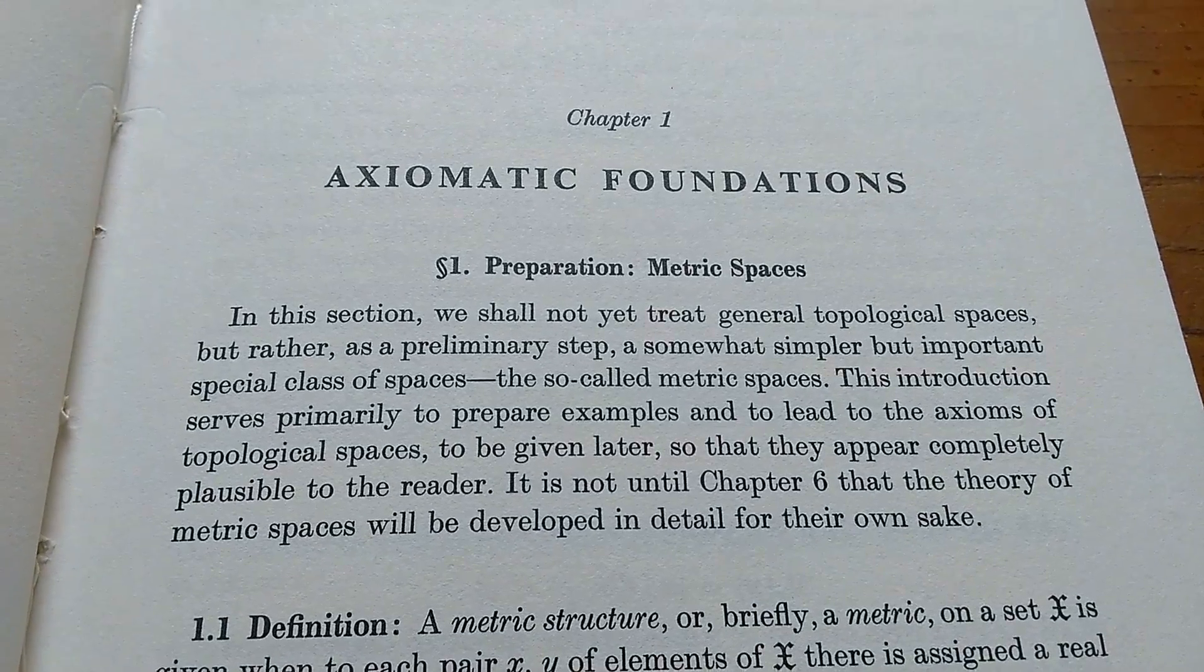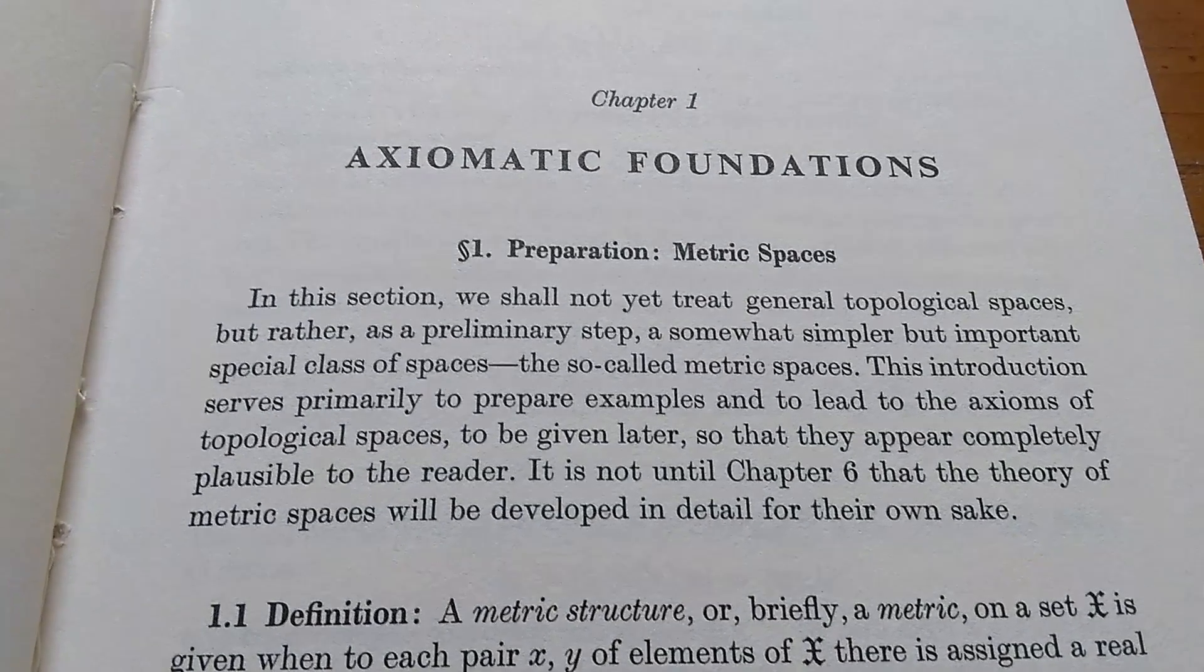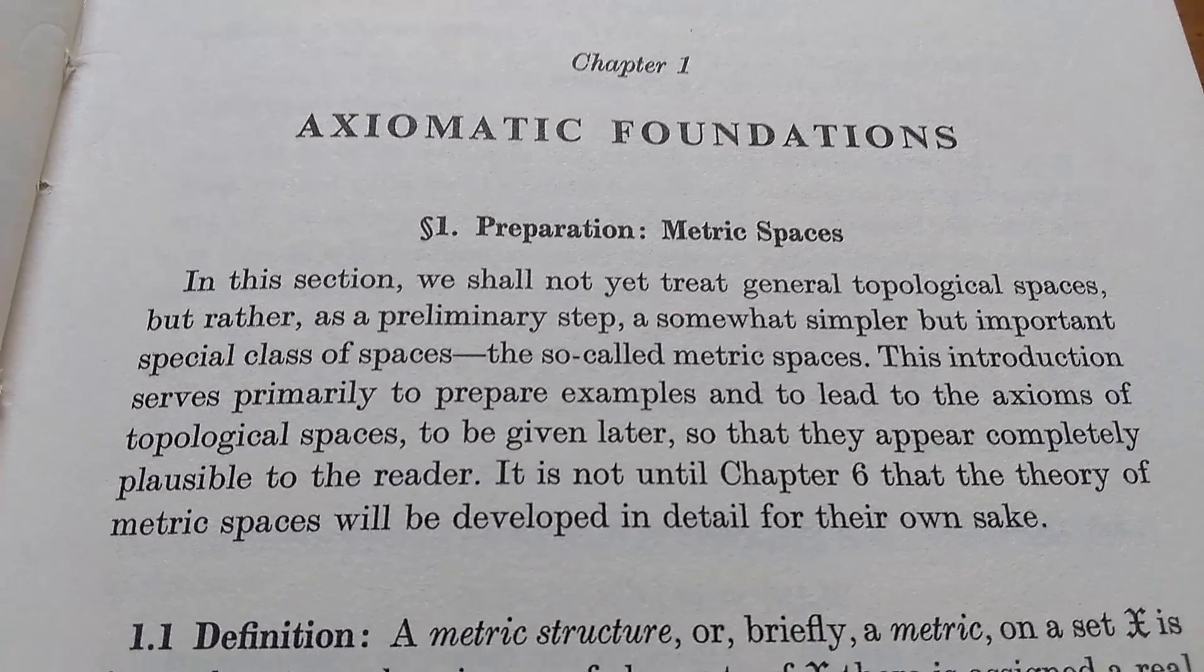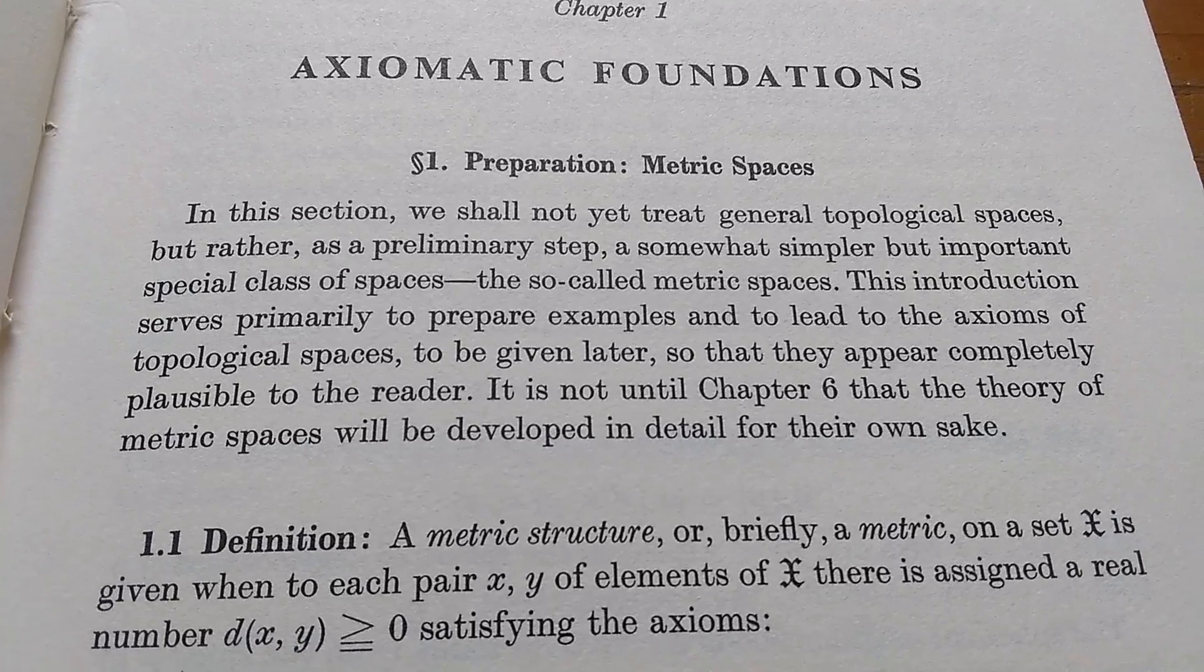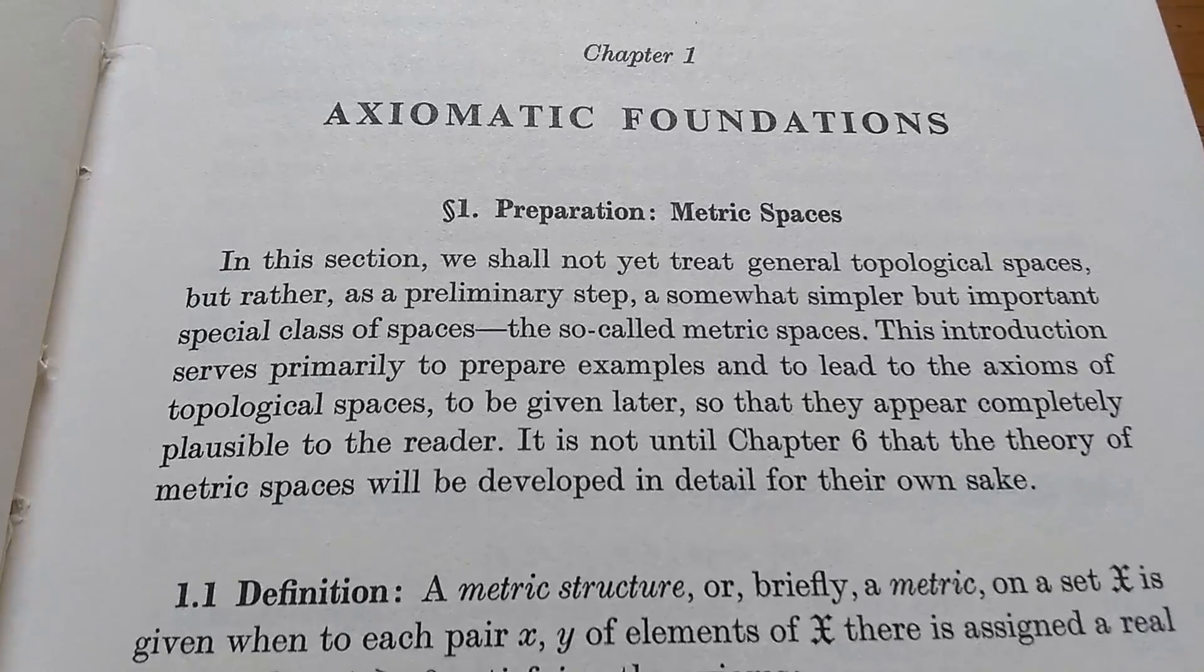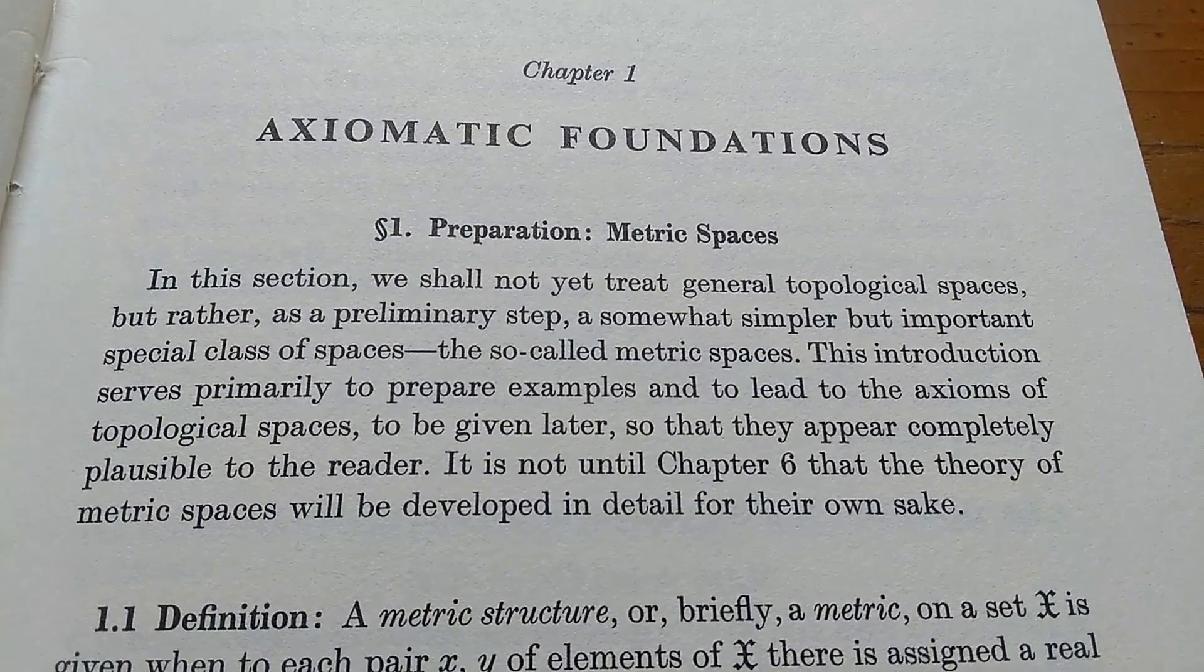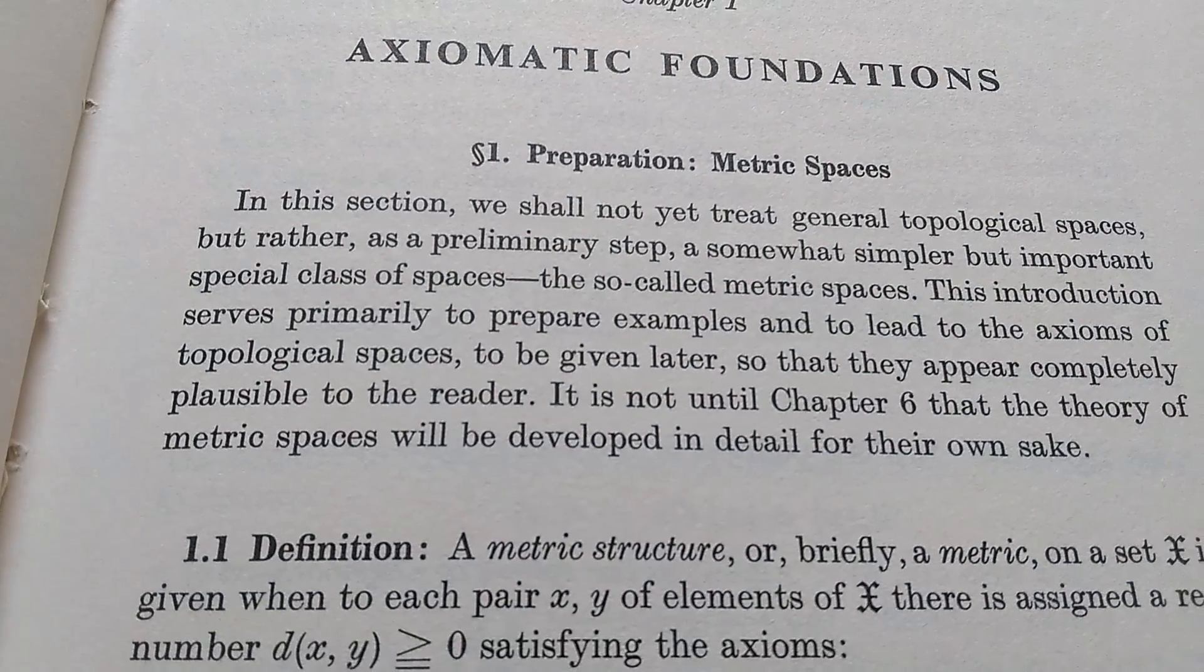This is the beginning. So he starts off not with sets, not with functions, but with metric spaces. So already, chapter one, as an axiomatic foundation, Wolfgang jumps into metric spaces. It says, 'In this section, we shall not yet treat general topological spaces, but rather, as a preliminary step, a somewhat simpler but important special class of spaces, the so-called metric spaces. This introduction serves primarily to prepare examples and to lead to the axioms of topological spaces to be given later, so that they appear completely plausible to the reader. It is not until chapter six that the theory of metric spaces will be developed in detail for their own sake.'